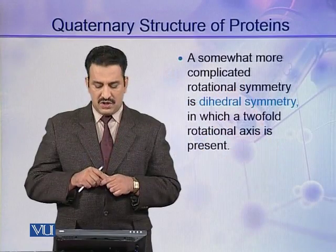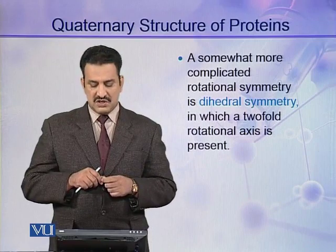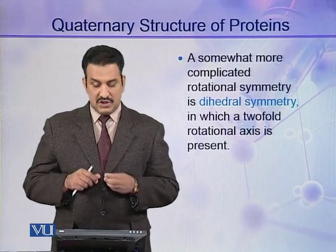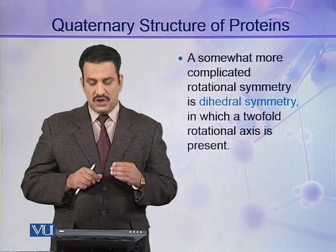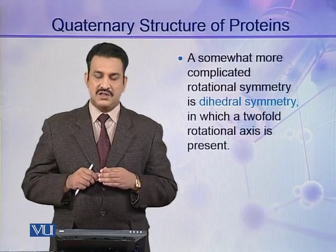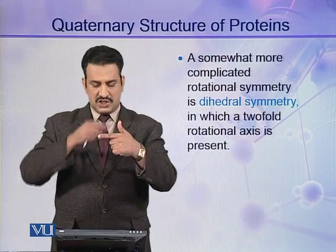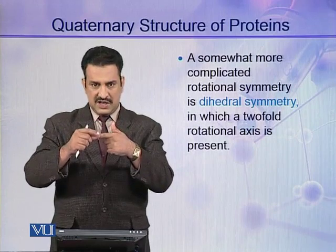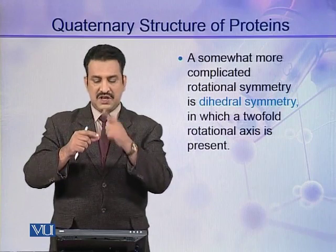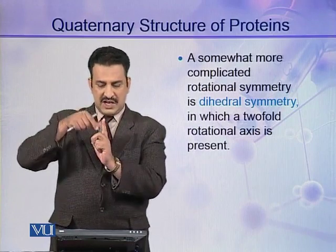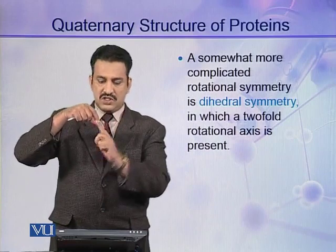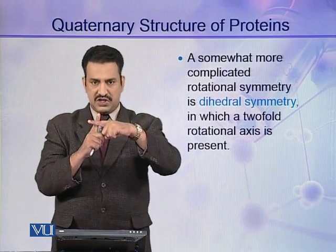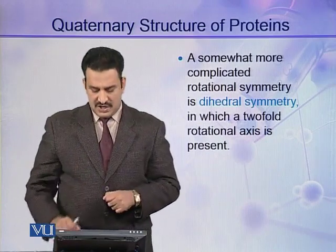A somewhat more complicated rotational symmetry is dihedral symmetry. In dihedral symmetry, a two-fold rotational axis is present — there is one rotational axis with protomers arranged around it, and in the same molecule there may be another rotational axis. These two rotational axes are normally at right angles to each other, and such symmetry is called dihedral symmetry.